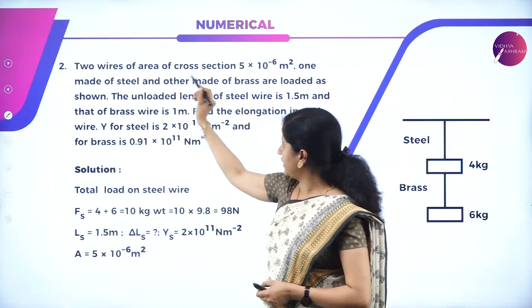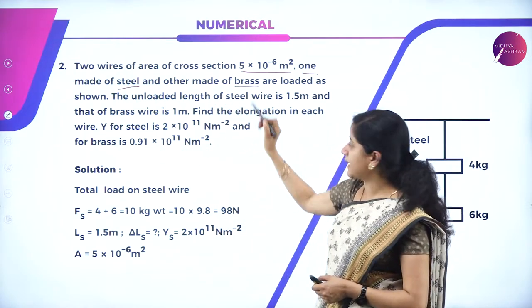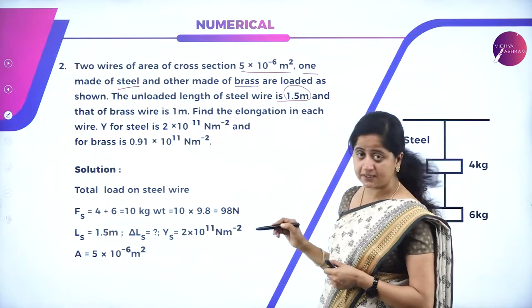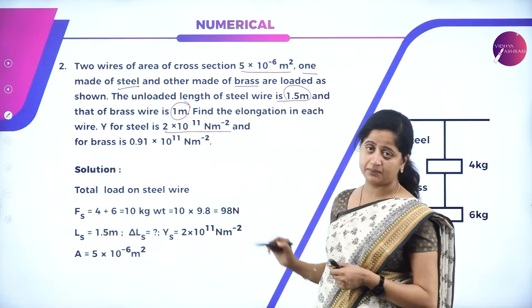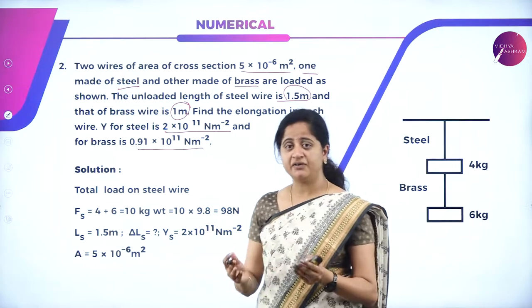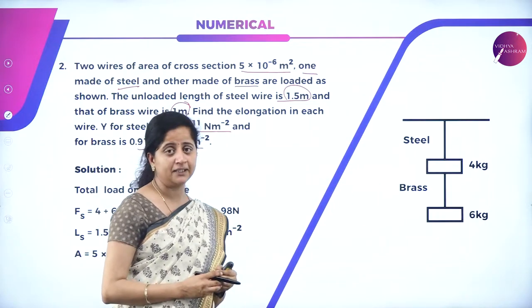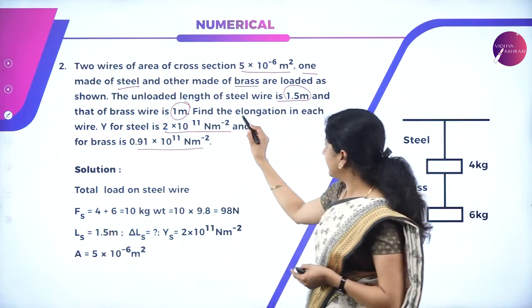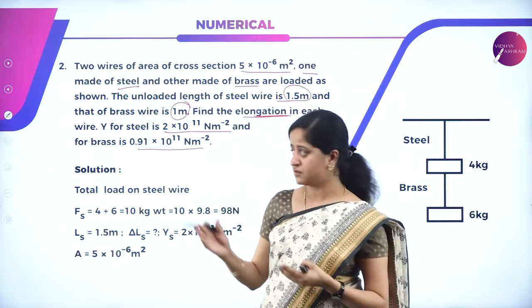The next problem: two wires of area of cross-section 5×10⁻⁶ meter square — one made of steel and the other of brass — are loaded as shown in the figure. The unloaded length of the steel wire is 1.5 meter and that of brass is 1 meter. Find the elongation in each wire. Young's modulus for steel is 2×10¹¹ N/m² and for brass is 0.91×10¹¹ N/m².